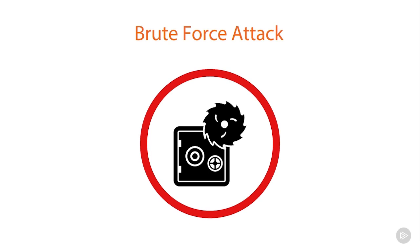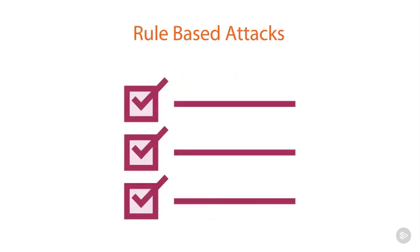One of the things we hopefully discovered during enumeration is the different rules the target may have in place for passwords — lockout periods, lockout thresholds, the length of the password, and complexity requirements. If I know you have to change passwords every 60 days, I know I've got 60 days to figure out the password before you rotate. Or if I know it has to be at least 12 characters long, I can customize my password cracking utility to apply those rules to what it's brute forcing.